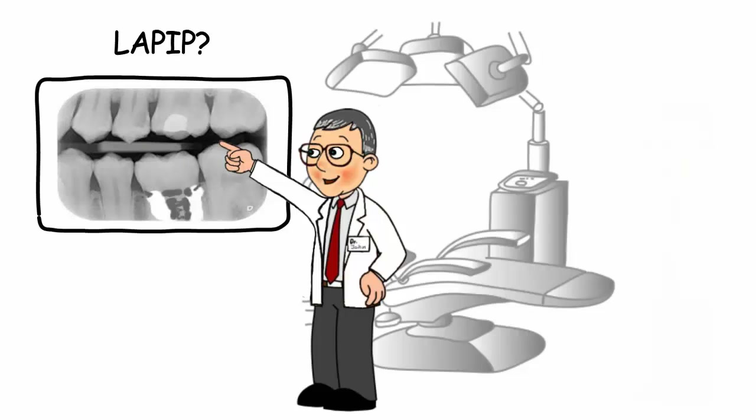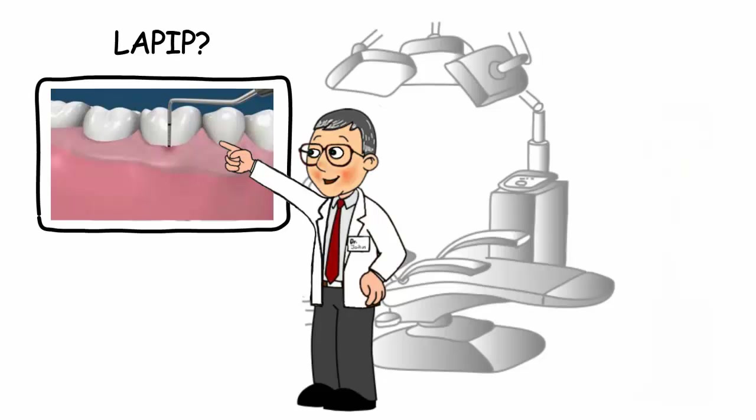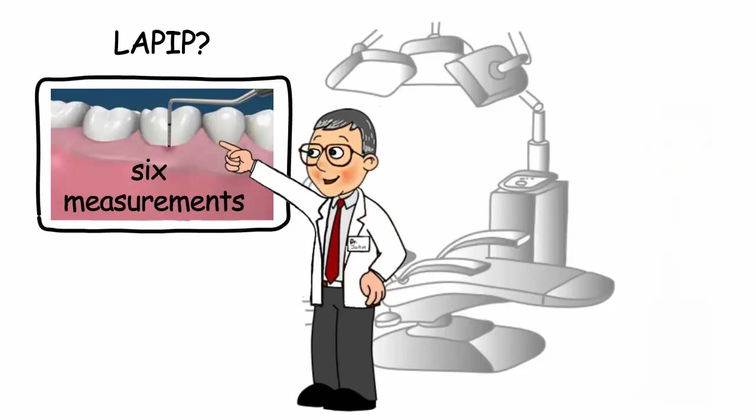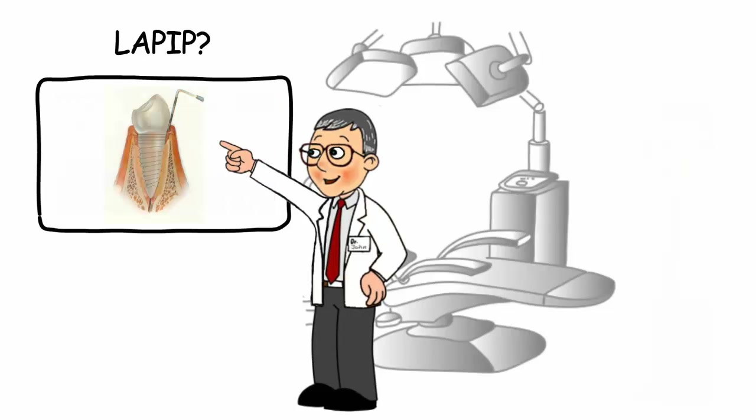Then, and this is critically important, they need to have your gums evaluated and six measurements per implant need to be made with a periodontal probe. The instrument is placed between your gum and your dental implant and a measurement is taken in millimeters.